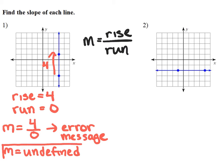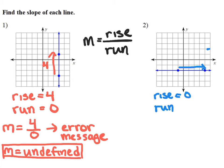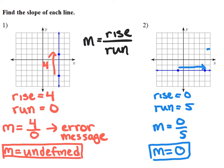That's the case for every vertical line, or a line that goes straight up and down. For the other example, going from left to right, the rise is zero because we're not moving up or down, and the run is five units to the right. So the slope is zero divided by five, which gives a slope of zero. Whenever you have a vertical line, the slope is always undefined. For a horizontal line, the slope is always zero.